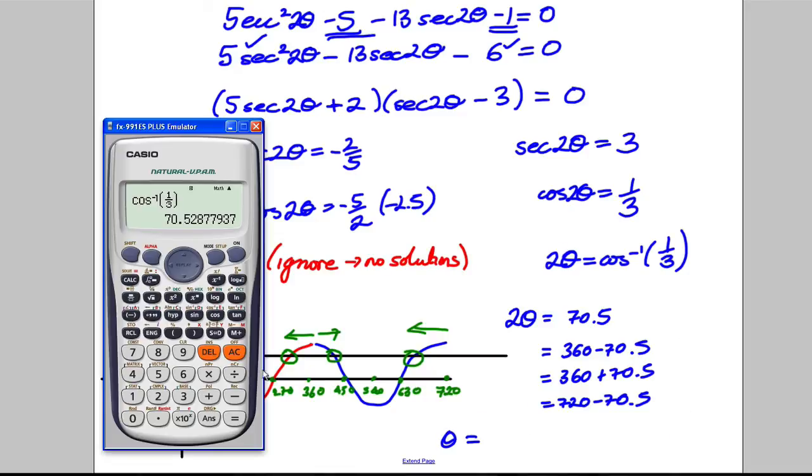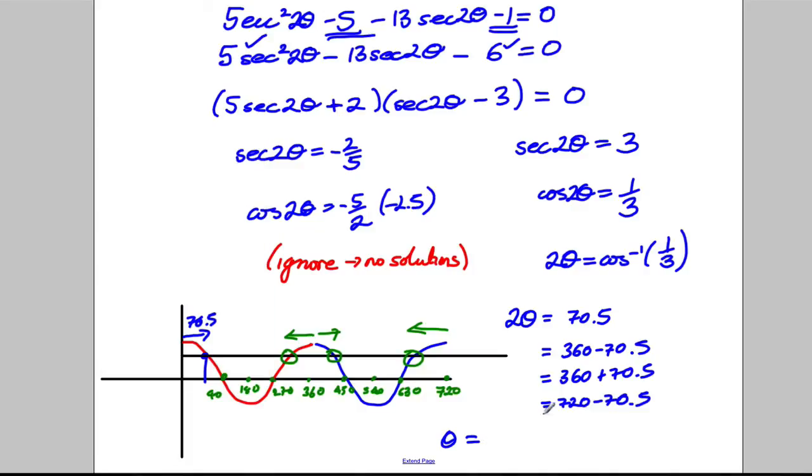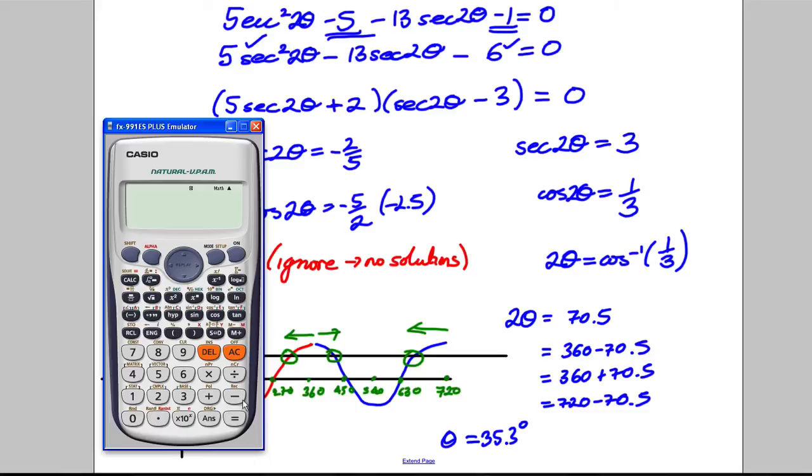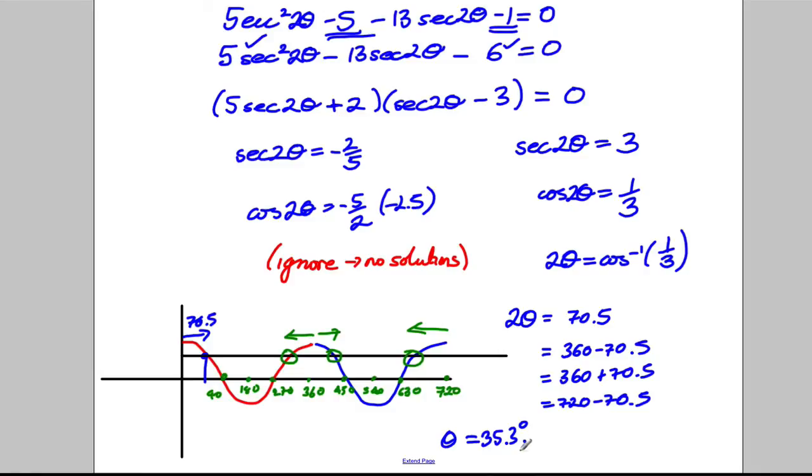They're all my 2 theta values, so my theta values are as follows. So, 70.5 divided by 2, which is 35.3 to 1 decimal place, so 35.3 degrees is my first answer. The next one, I do 360 subtract 70.5, and then I divide it by 2, and my answer is 144.8, so 144.8 degrees.